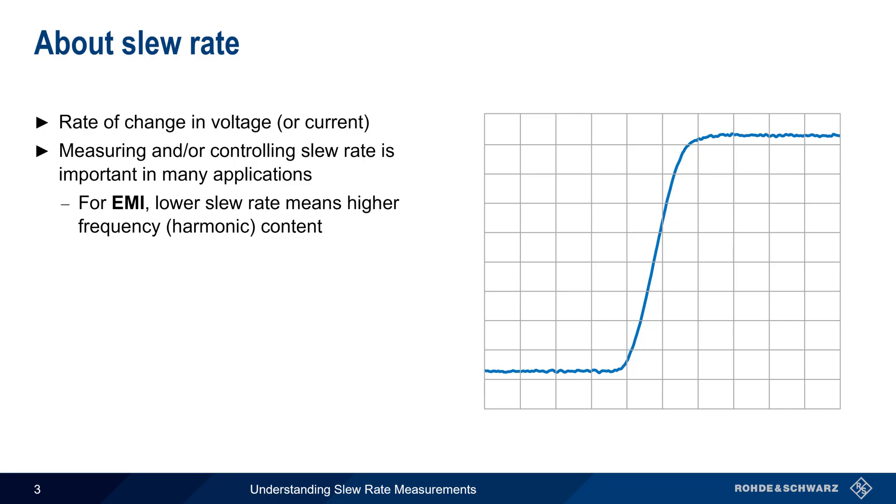Reducing or limiting slew rate is the most common approach in dealing with high inrush currents in electrical or electronic devices.